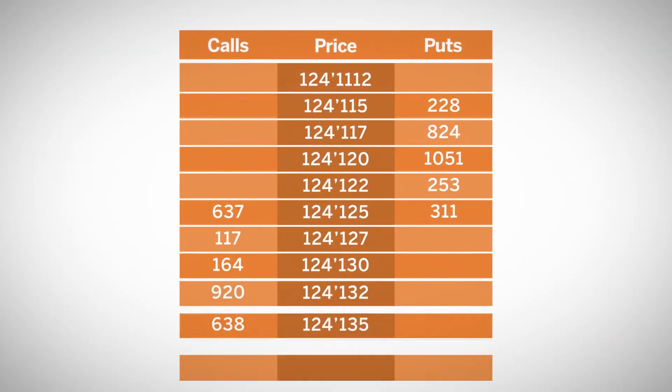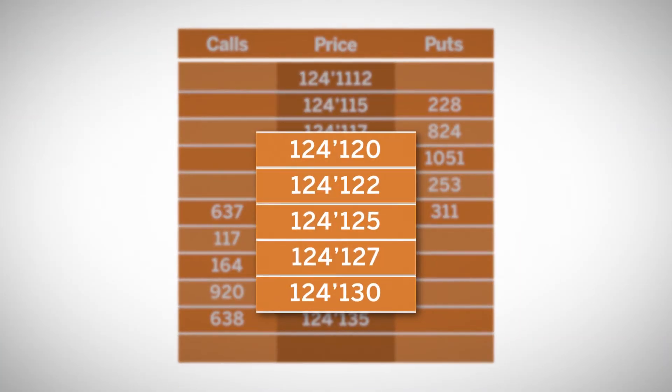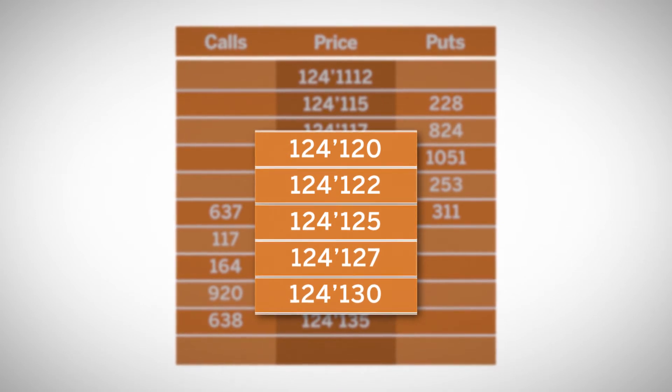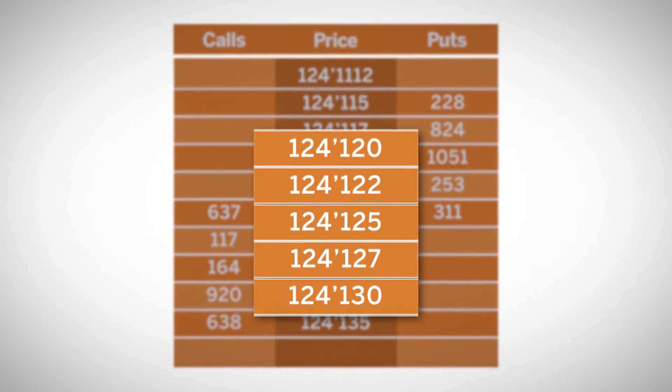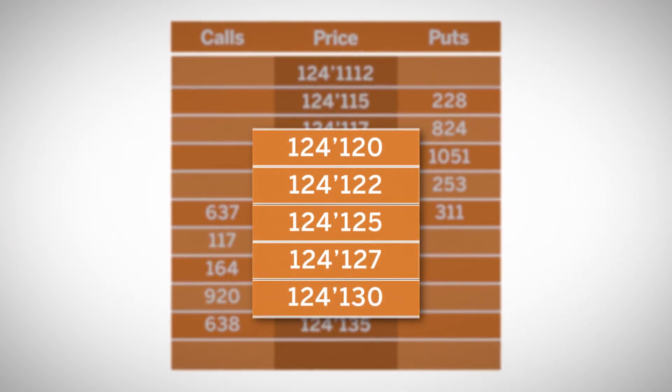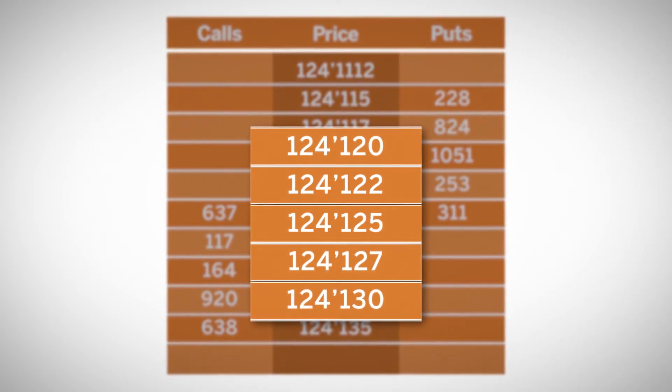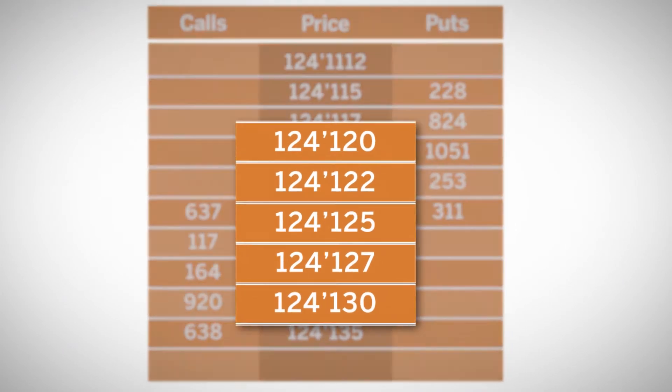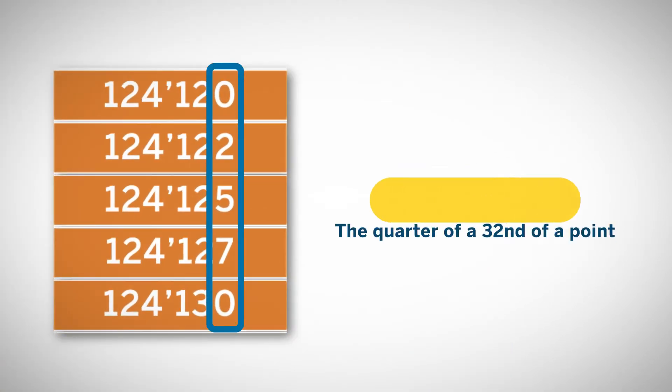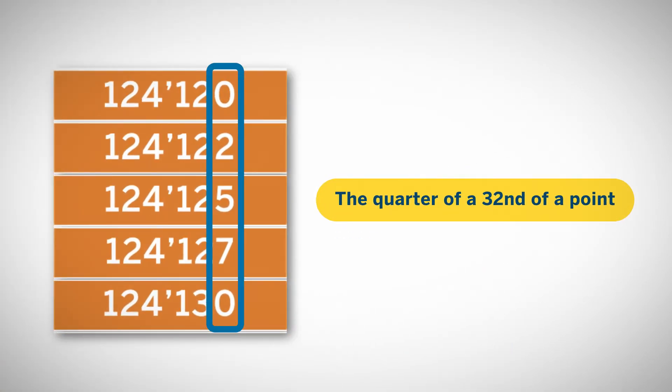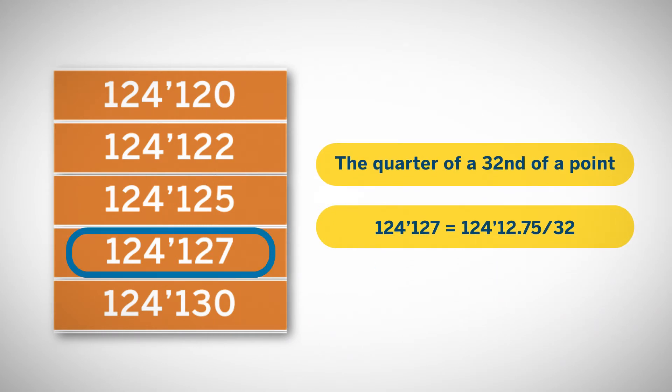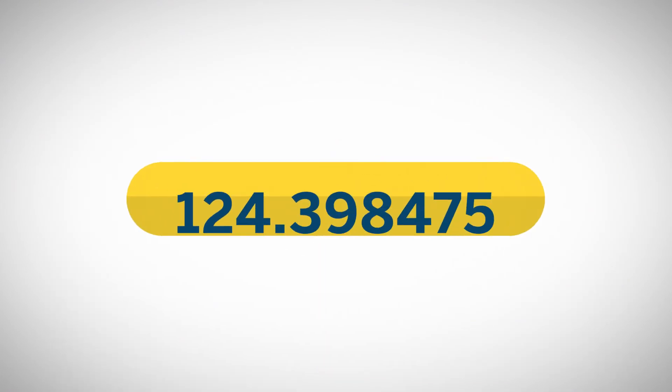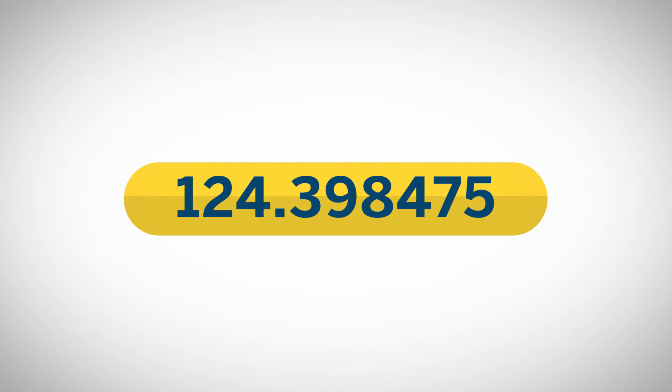For example, on a trading depth of market, the third digit after the apostrophe in the 5-year represents the quarter of a 32nd of a point. For instance, 124-12.75/32 equals 124.3984375 in decimal.